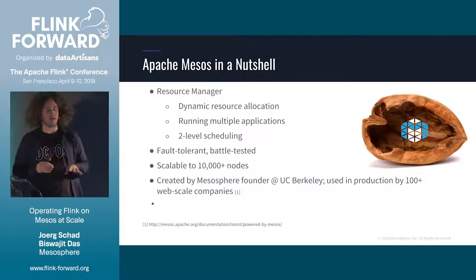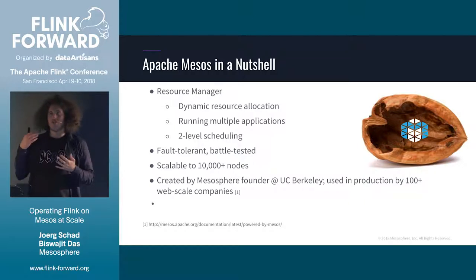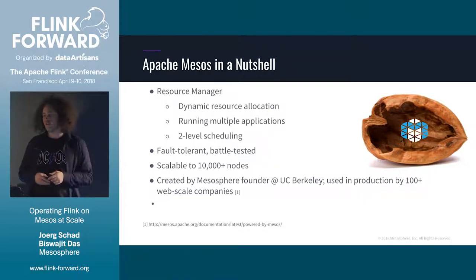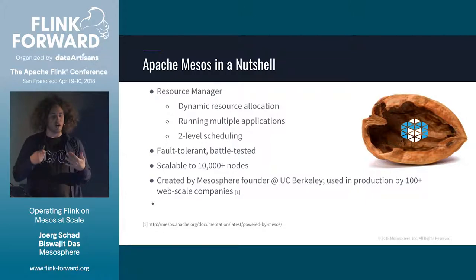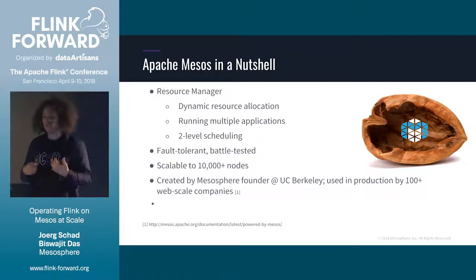To clarify what Apache Mesos is — at its core, it's a resource manager. Imagine having a large cluster and needing to negotiate resources between different systems: multiple Flink instances, Spark, Cassandra, Kafka, Kubernetes. Mesos manages this. It's fault-tolerant, battle-tested — used by Twitter for over 10 years on clusters scaling to more than 10,000 nodes. Most of you have probably used a Mesos cluster in the background, whether through Twitter or Airbnb.